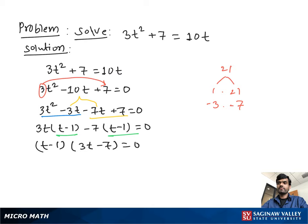Both terms' multiplication was 0, so we set each term equal to 0. t - 1 = 0 or 3t - 7 = 0. If we add 1 on both sides, we get t = 1. If we add 7 on both sides, we get 3t = 7.